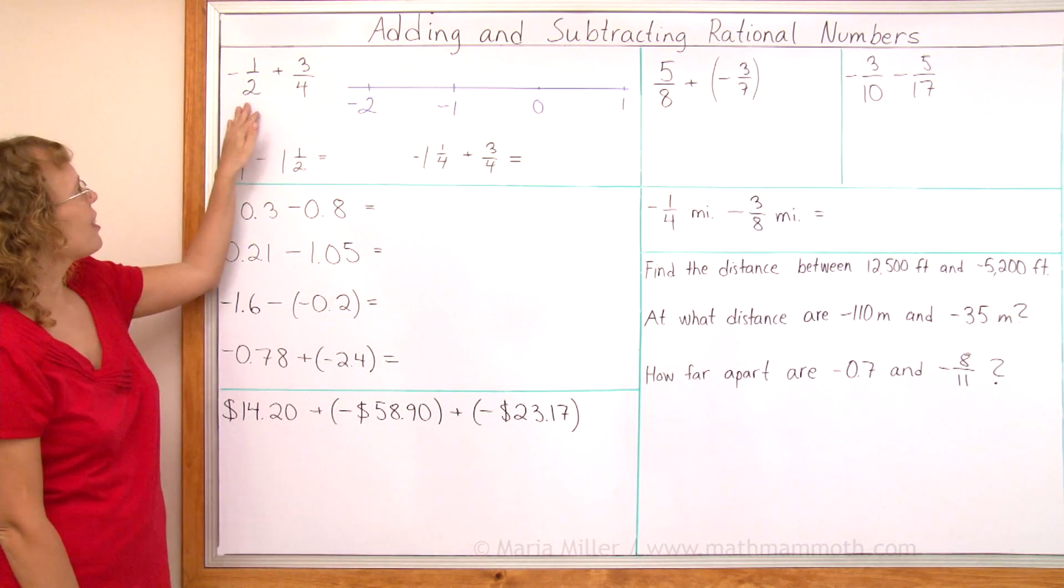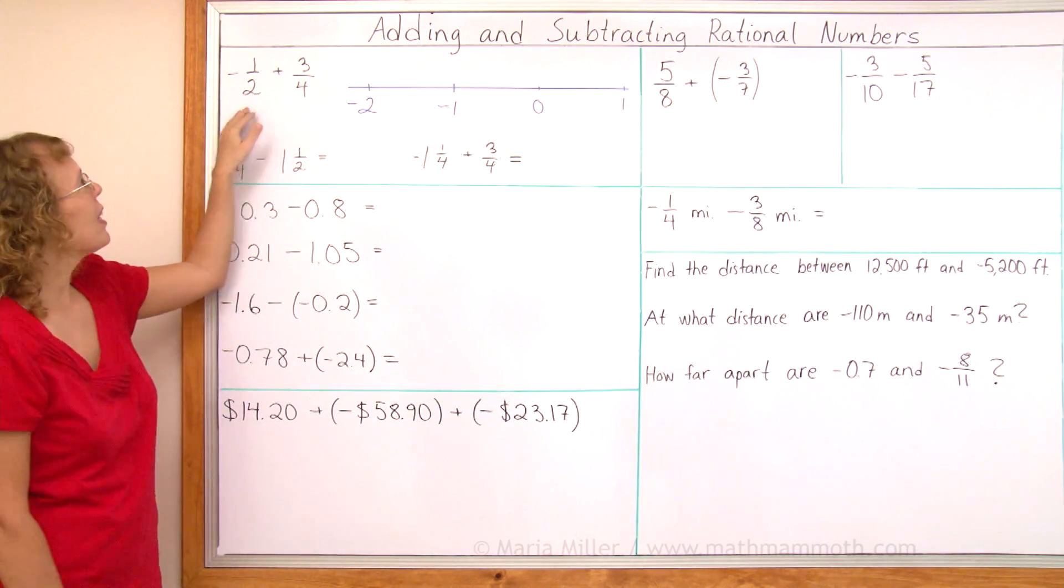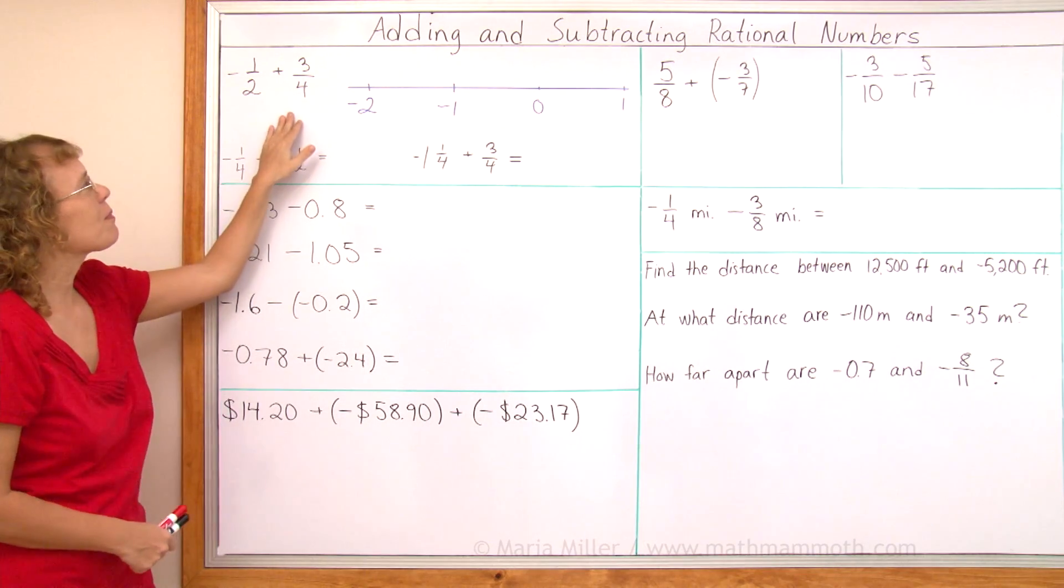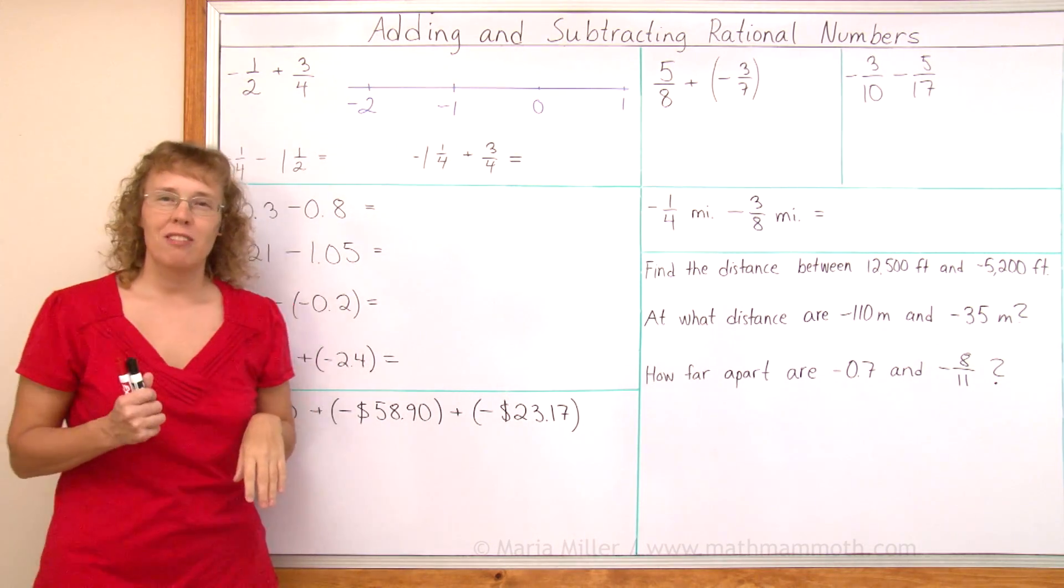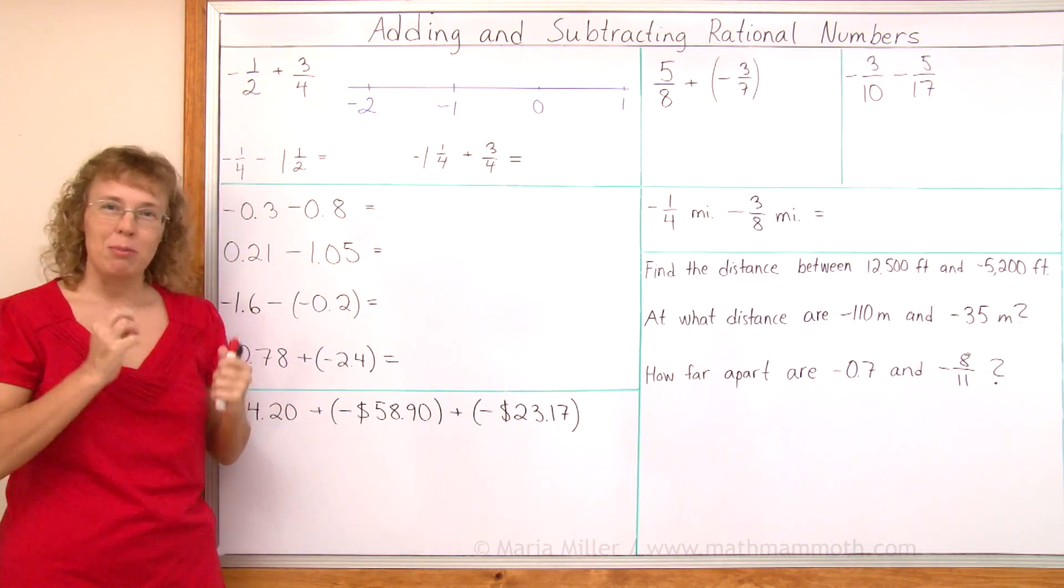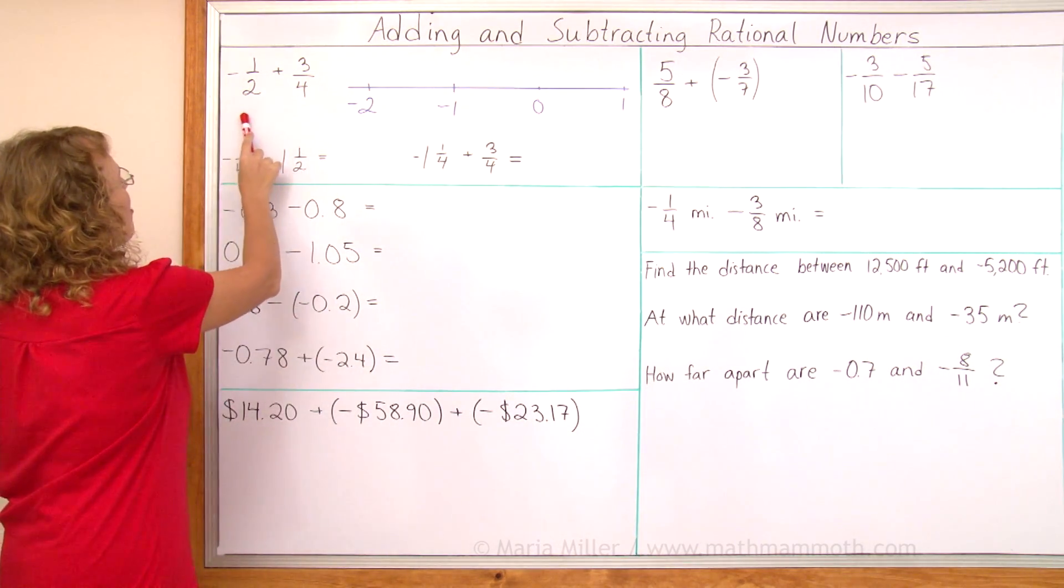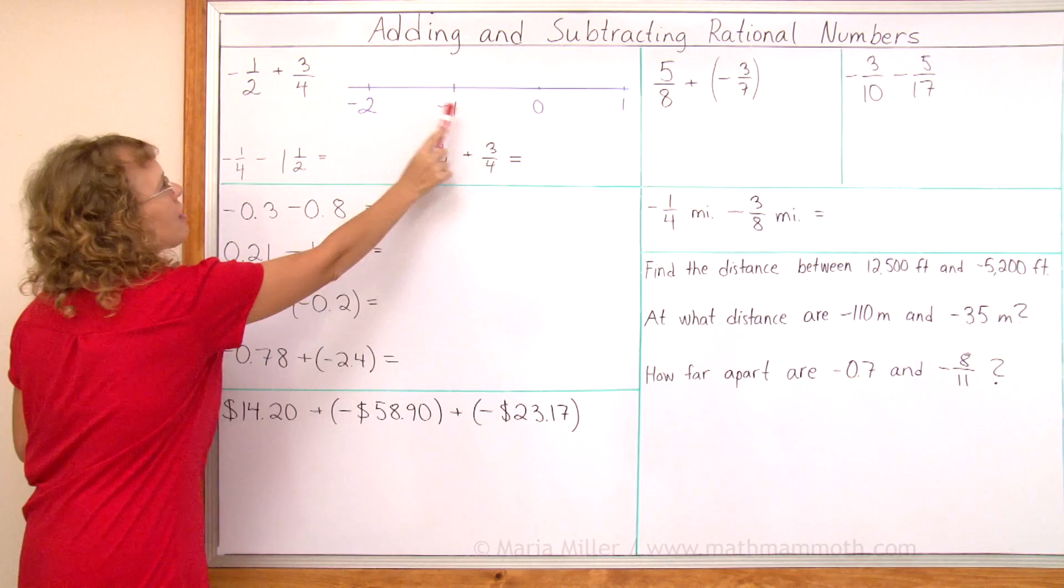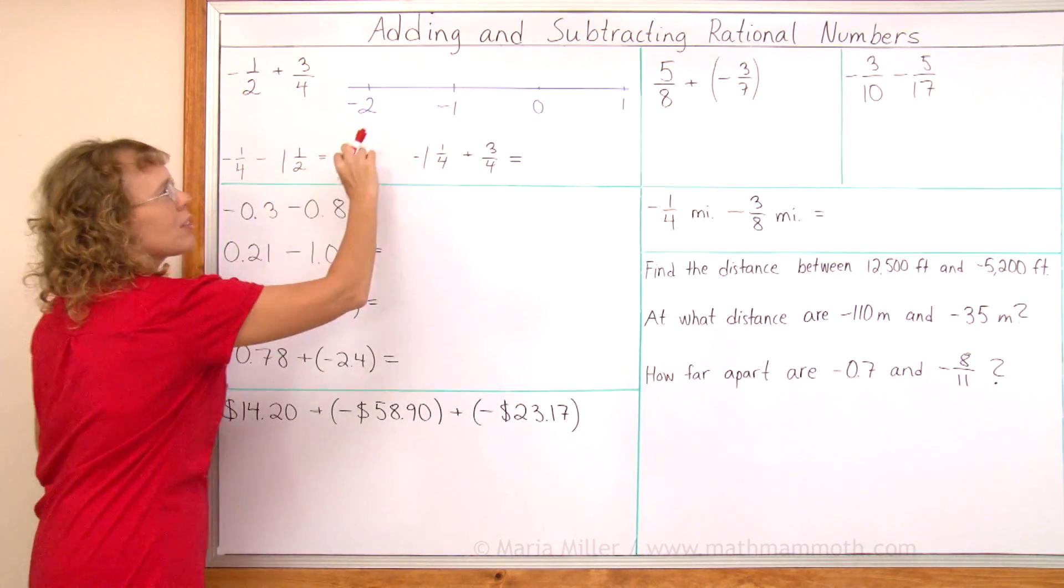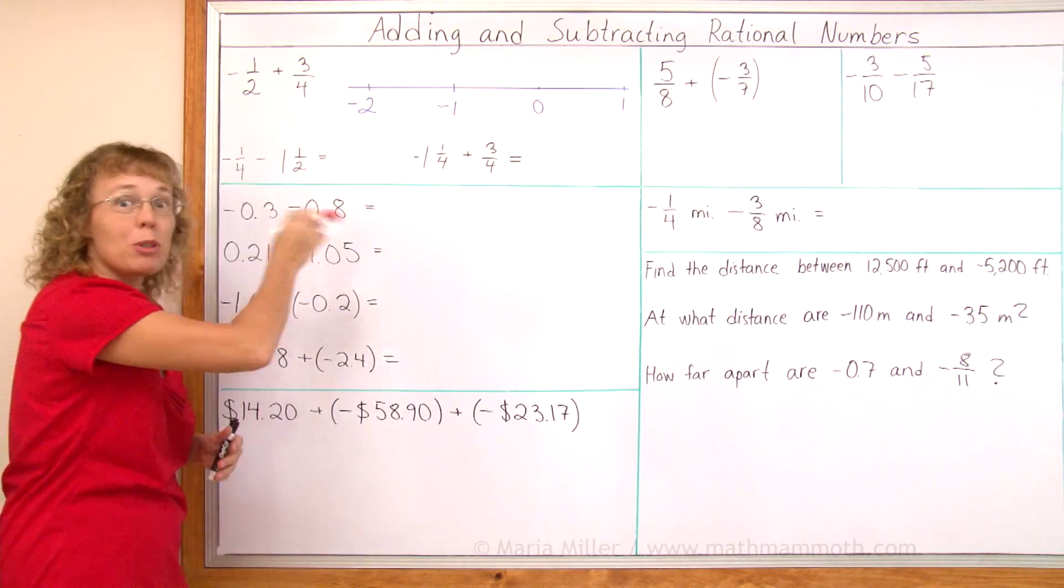First, I have here an easy addition problem, negative one-half plus three-fourths, and we're going to solve it on the number line using number line jumps. For that I need to first find negative one-half on the number line and then jump three-fourths to the right towards the positive.